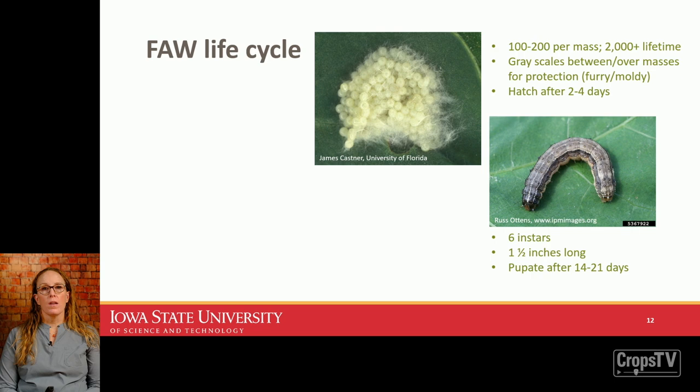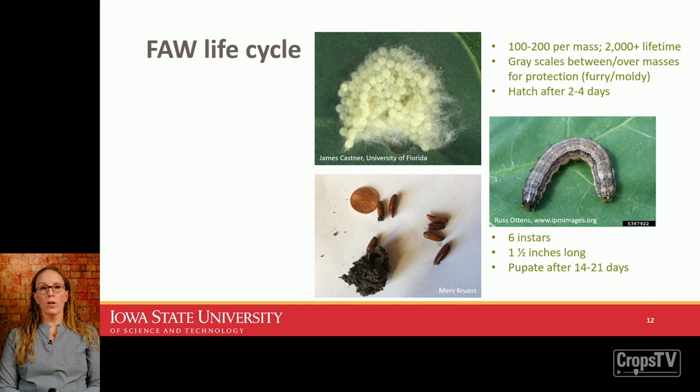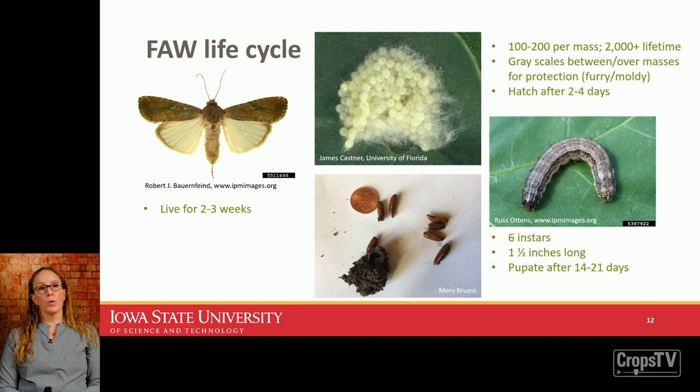The larvae go through six instars, getting bigger and eating more with each one. The final instar is about an inch and a half long. Depending on temperatures, it could be 14 to 21 days of feeding through all six instars before they pupate. They move into a resting pupal stage in the soil with a characteristic noctuid-type pupal case. Adults live about two to three weeks, mating, feeding, and laying a huge number of eggs.